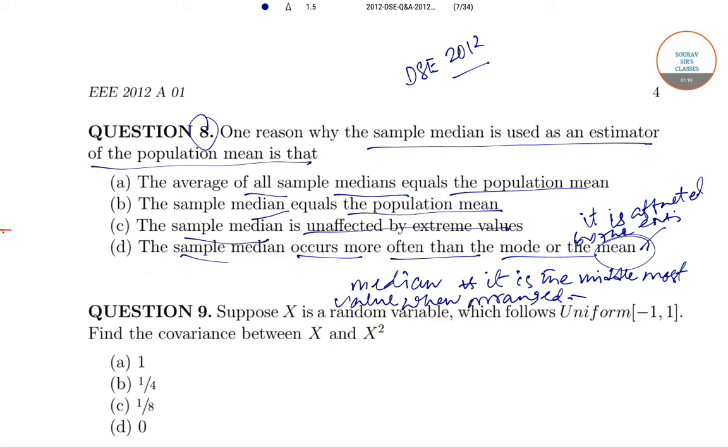But in the case of median, as it is just the middle-most value, it does not depend upon the extreme values. So sample median is unaffected by extreme values - this is the correct answer. Now suppose X is a random variable which follows uniform distribution from -1 to 1. Find the covariance between X and X².